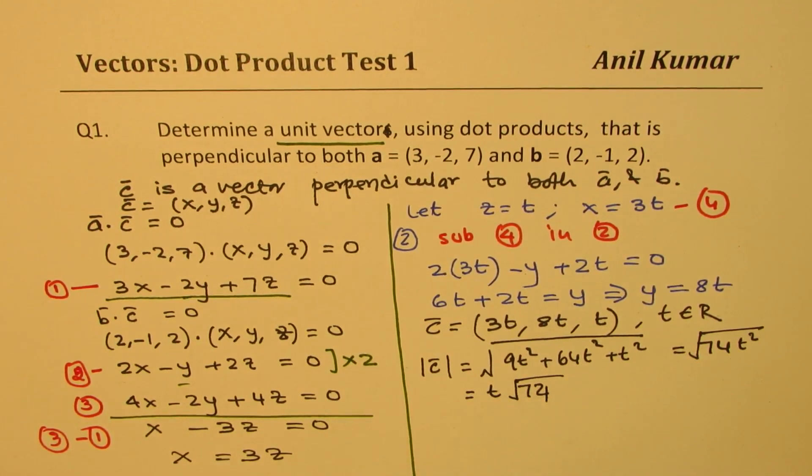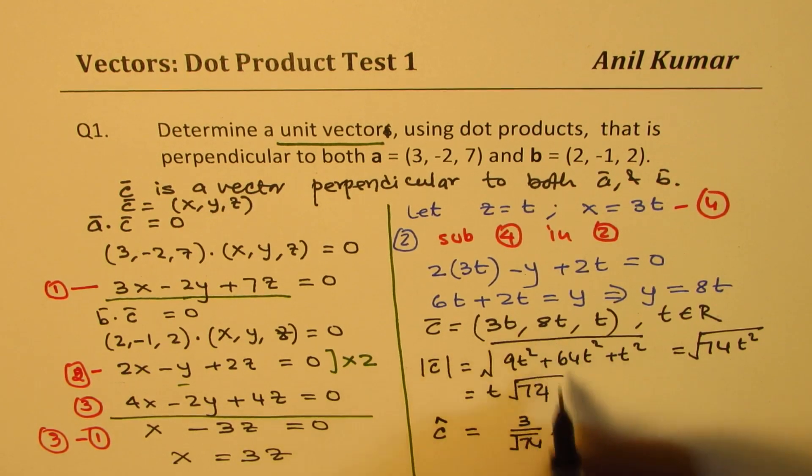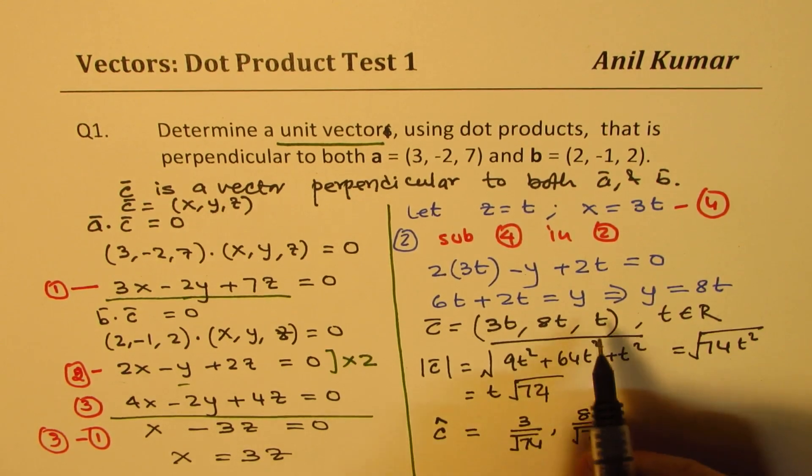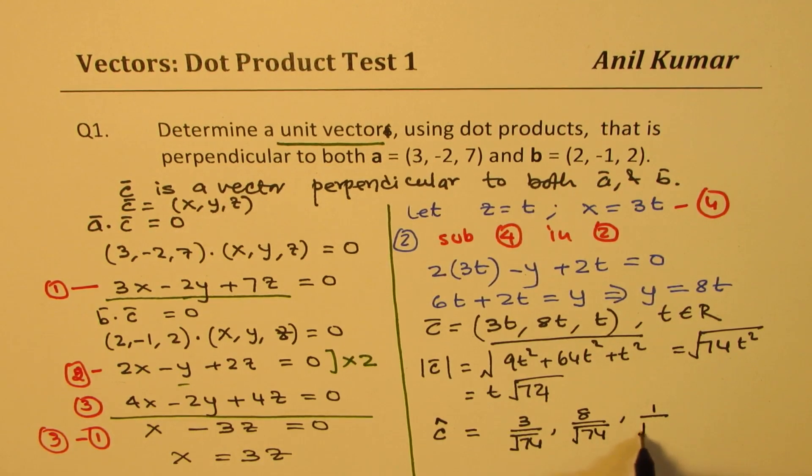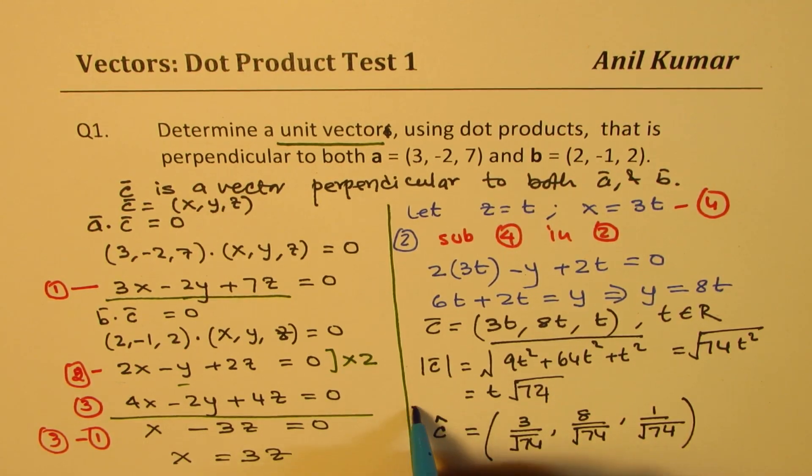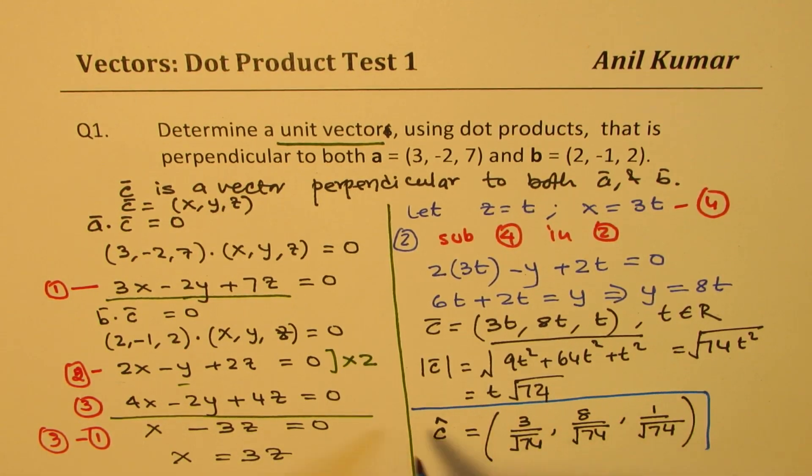I'm not really simplifying on this, but that gives me the unit vector. So the unit vector c, which I'm writing like this, is basically, you have to divide this vector by this term. So what you get here is 3 over √74, 8 over √74, and 1 over √74. t and t cancels. So that becomes the unit vector which is going to be perpendicular to both the vectors.